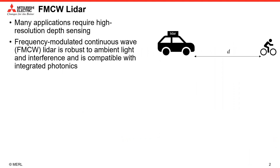Many applications require high-resolution depth sensing, including autonomous navigation and infrastructure monitoring. Unlike direct time-of-flight LiDAR, frequency modulated continuous wave LiDAR — FMCW LiDAR for short — is robust to ambient light interference.